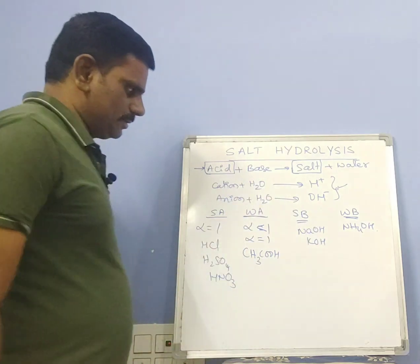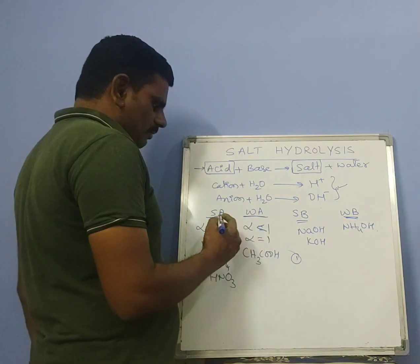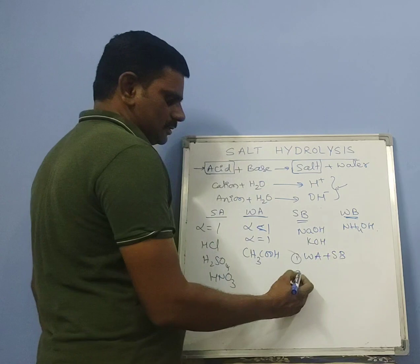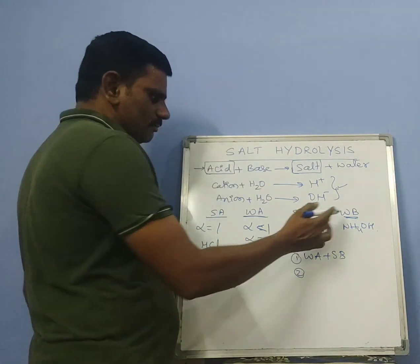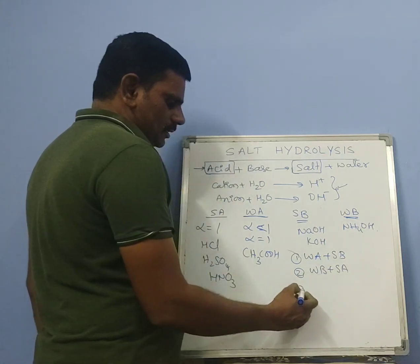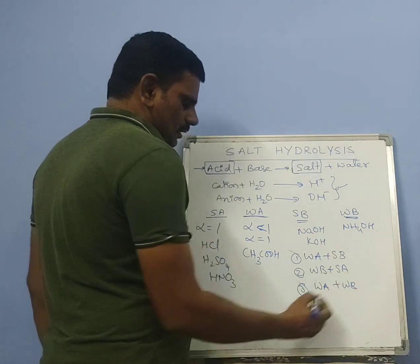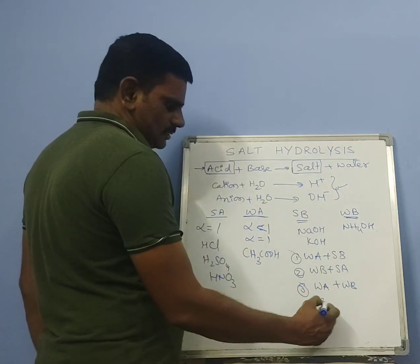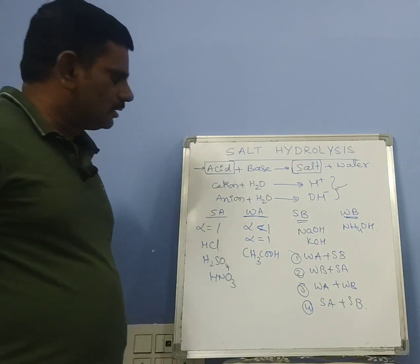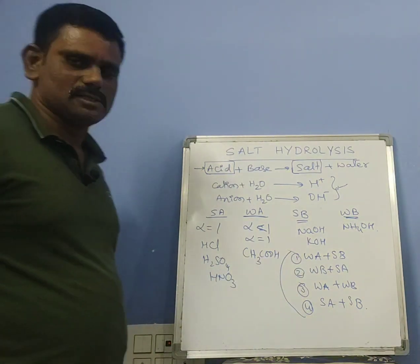From these acids and bases, four types of salts are formed: salt from weak acid and strong base, salt from weak base and strong acid, salt from weak acid and weak base, and salt from strong acid and strong base. We will discuss all four categories in the salt hydrolysis part.